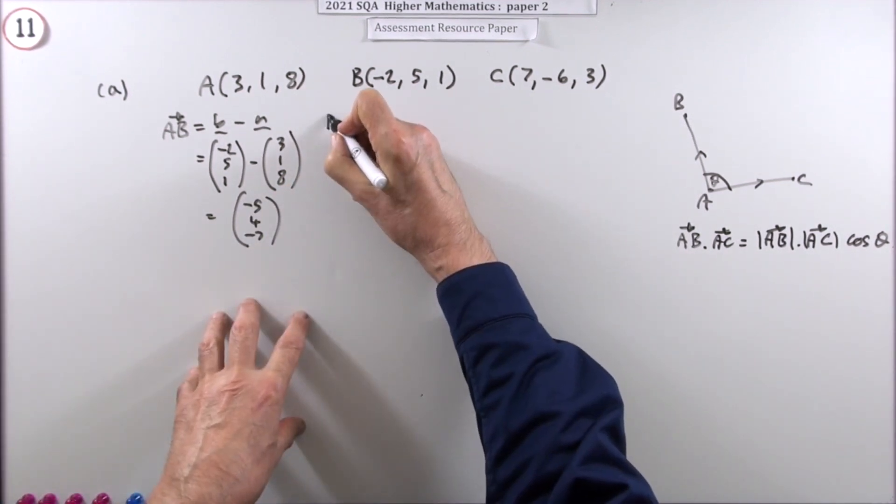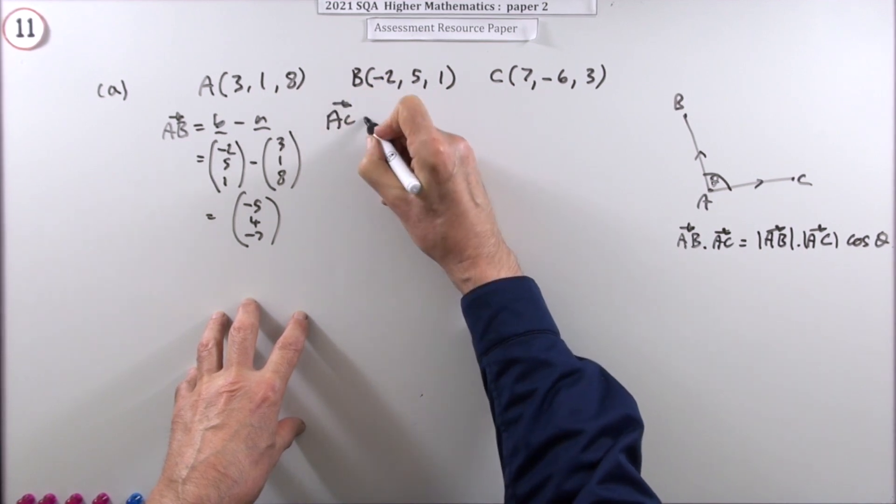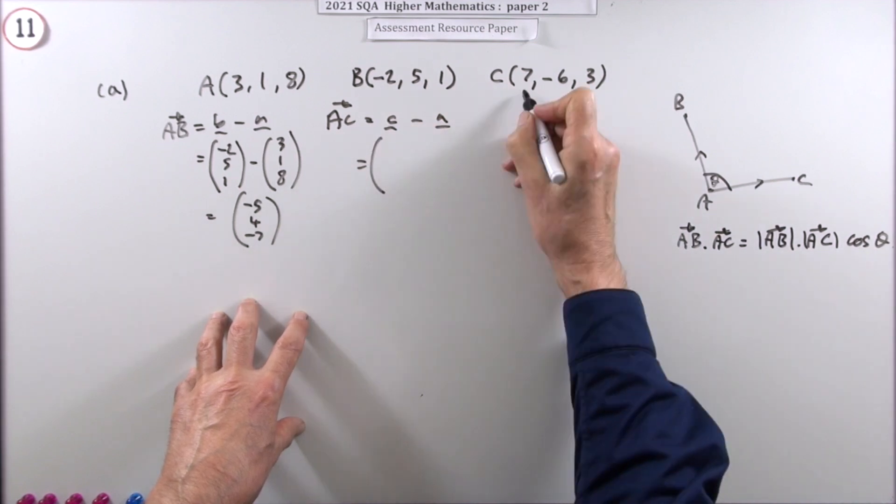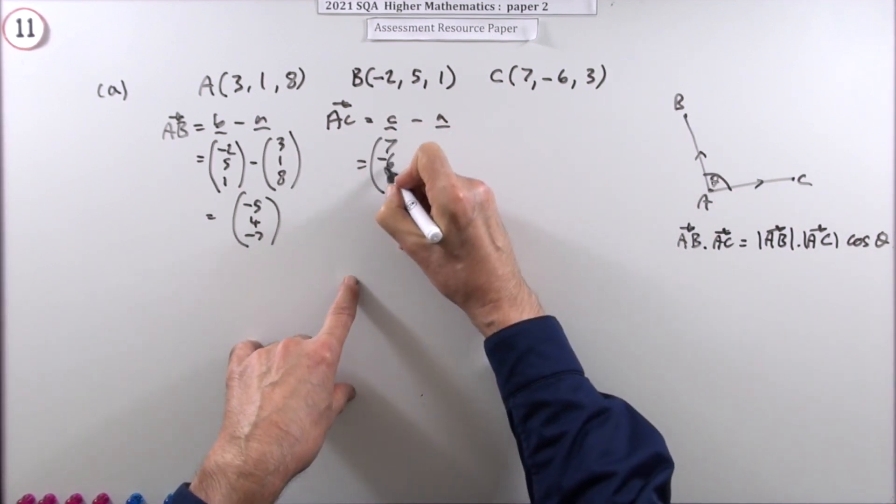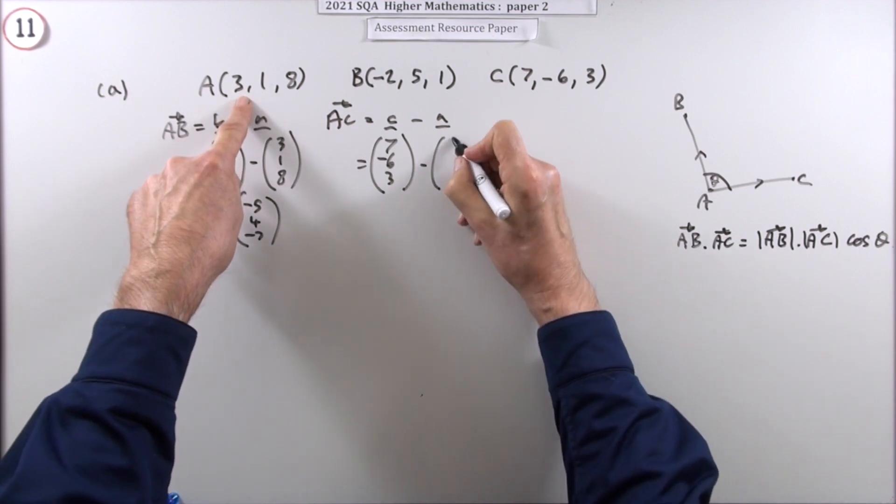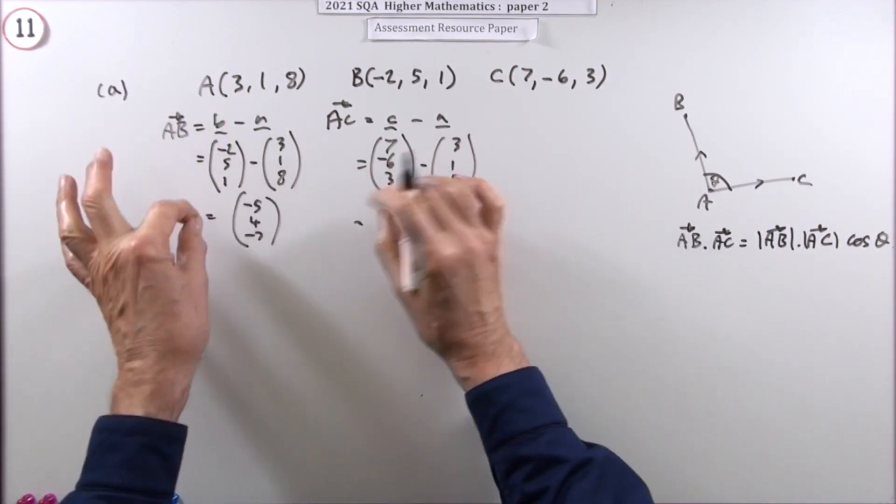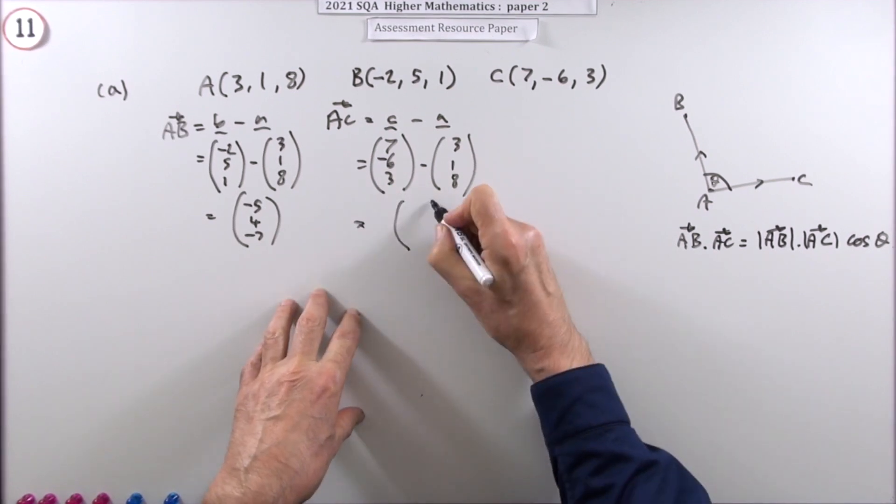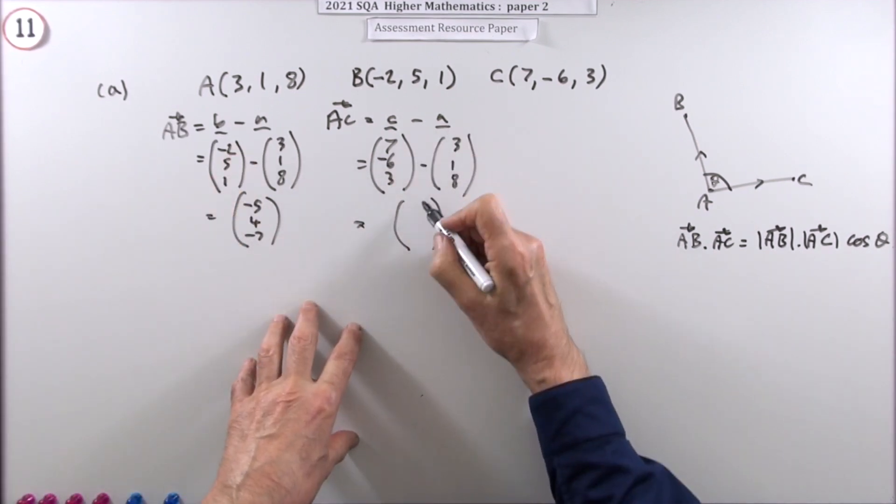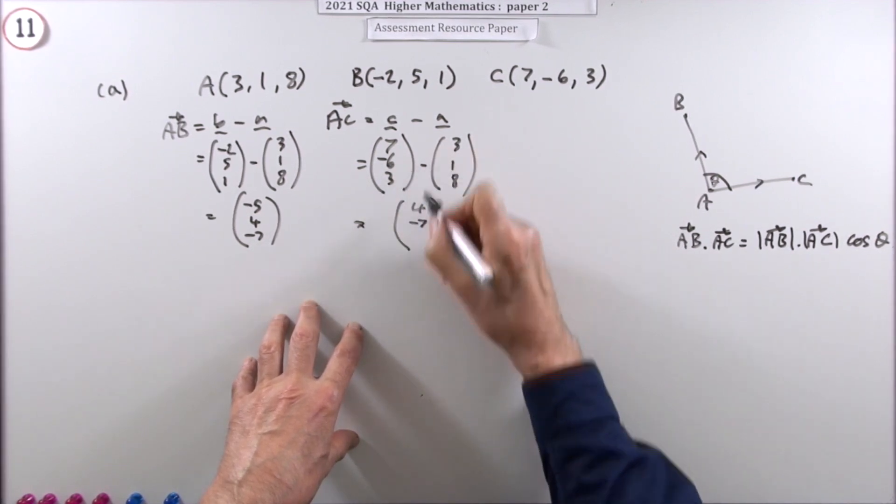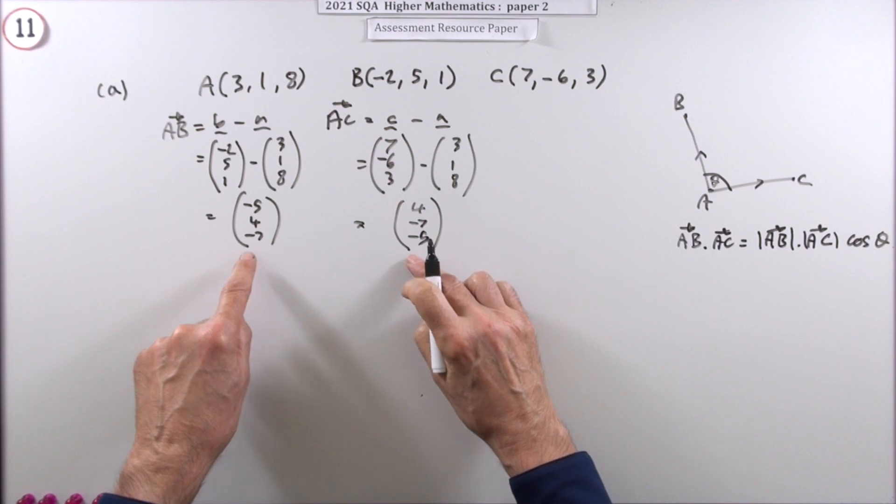And what is AC? Well that'll be C minus A. So that'll be (7, -6, 3), take away (3, 1, 8). Same as before. You can always do these in parallel. So you've got 7 take away 3, that's a 4. That's a -7. And that's a -5.